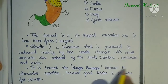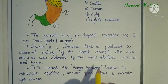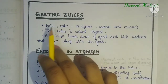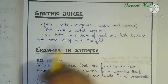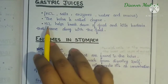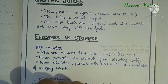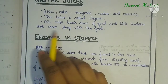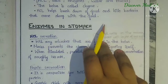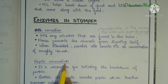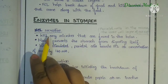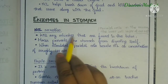Ghrelin is called the hunger hormone because it stimulates appetite, increases food intake, and promotes fat storage. Gastric juices consist of HCl, salts, enzymes, water, and mucus. The bolus, now called chyme, helps in the breakdown of food and kills bacteria that came along with the food.